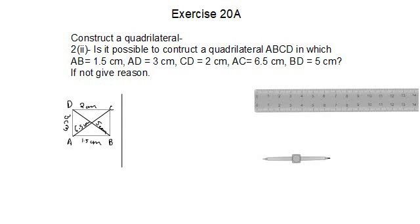This is the first part. The question asks: Is it possible to construct a quadrilateral ABCD in which AB equals 1.5 centimeters, AD is 3 centimeters, CD is 2 centimeters, AC is 6.5 centimeters, and BD is 5 centimeters? If not, give reason.